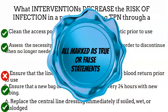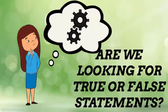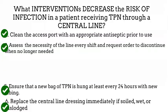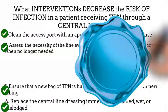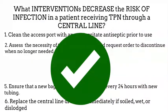Now we move on to our last step: double checking to see if we're looking for true or false statements — positive versus negative stems. Looking back at the question, we don't see any keywords indicating a negative stem. In fact, we're looking for true statements: interventions we would use to prevent infection in a patient with TPN through a central line. So all the statements we marked as true are the correct answers. Our correct answers are one, two, five, and six. Our distractors have been eliminated and we have gotten the correct answers.